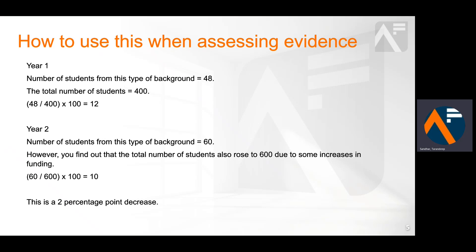Whilst it is correct to say that 60 is a 25% increase on 48, the real meaning of the data is better described by showing the percentage point difference, which tells a different story. So as well as being able to use the correct statistic, you can use this knowledge when assessing evidence to identify whether the correct figure is being used to convey the true meaning of the figures.